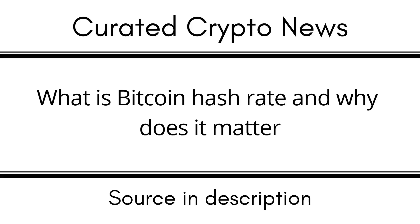What happens if Bitcoin's hash rate decreases? A decrease in hash rate exposes the network to cybercriminals and crypto heists due to the low cost of executing a 51% attack. A lower hash rate also makes cryptocurrency less decentralized, posing a considerable risk to crypto investors. To safeguard users against losing funds, crypto platforms could stop trading or delist a currency if the hash rate suddenly drops.